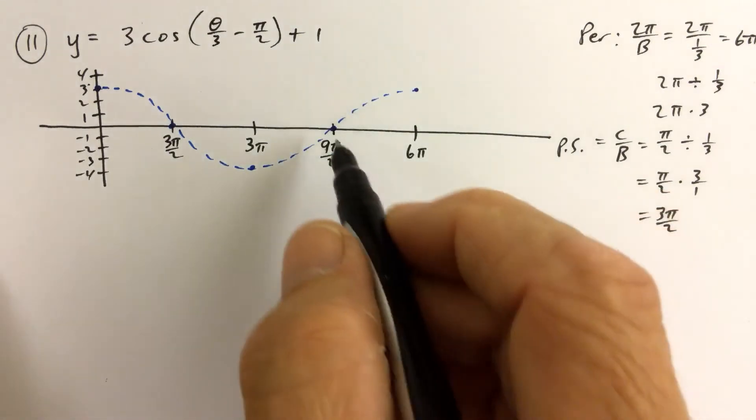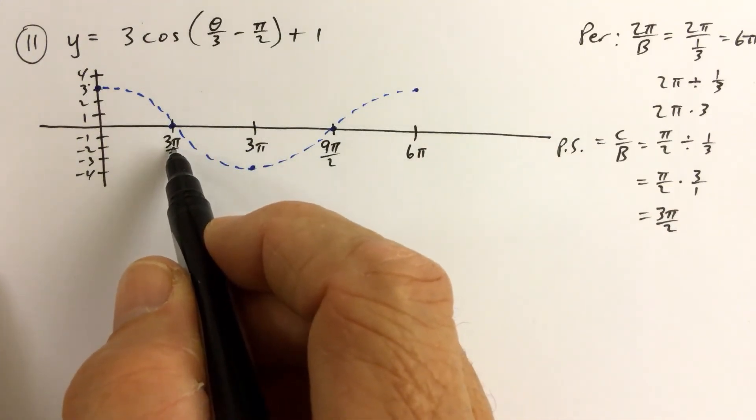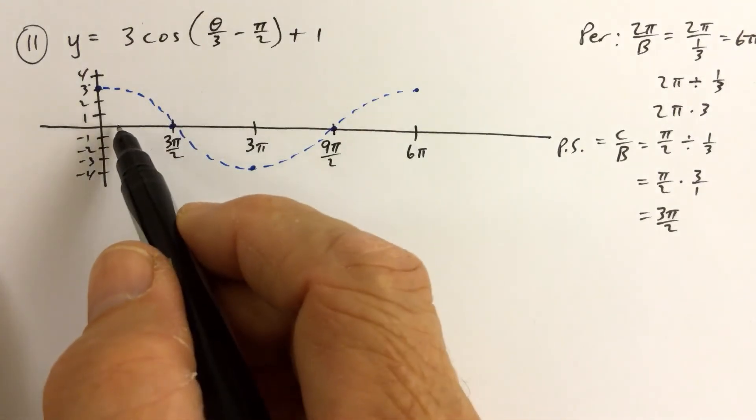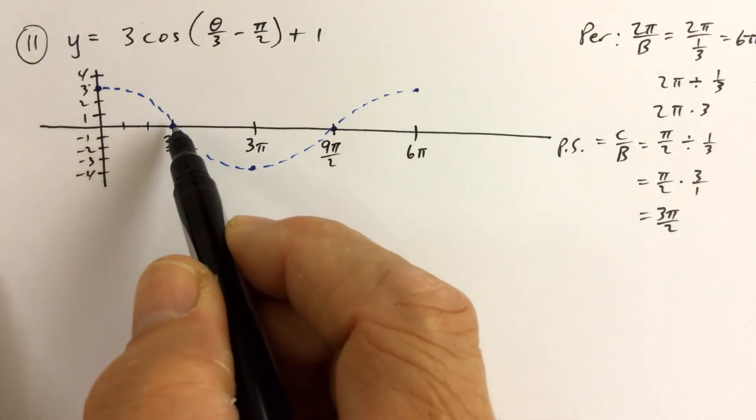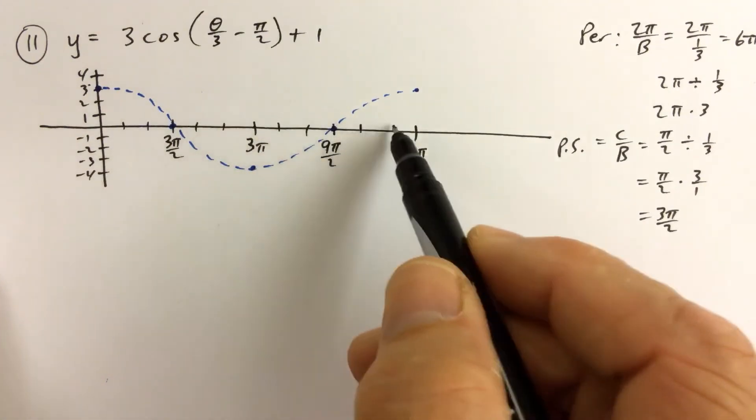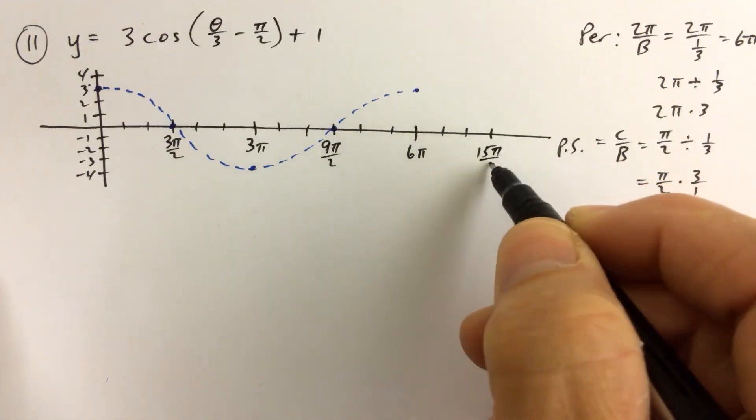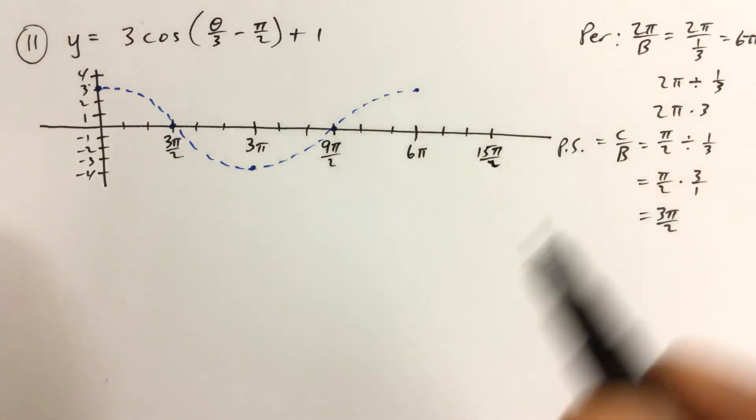So we have 3π over 2, and if this is confusing, you could think of it as 1π over 2, 2π over 2, 3π over 2, 4, 5, 6, 7, 8, 9, 10, 11, 12, 13, 14, 15π over 2. So you can count by π over 2s if you want.